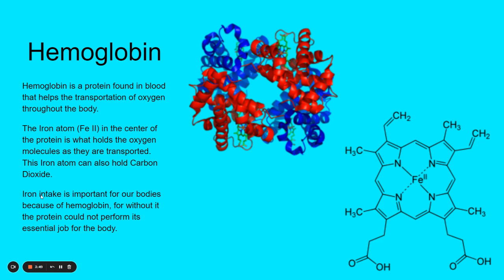This is also the reason why iron intake is so important for our bodies — we need it for hemoglobin, amongst other things. There are other things we use iron for in our bodies, but one of the major things is this hemoglobin that transports oxygen throughout the body.